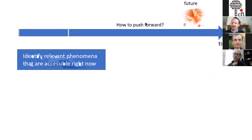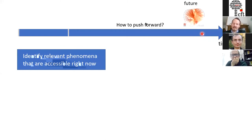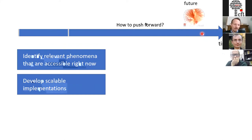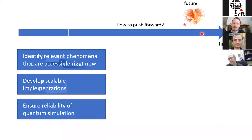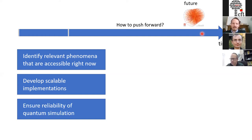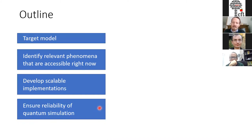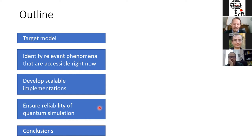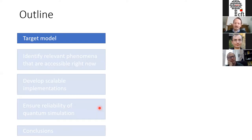We also want to proceed to more complex and larger systems, which requires scalable implementations. And once we scale up, we need to ensure that these devices work — interesting questions also from the theory side. The outline of my talk addresses these three topics as examples of recent work, preceded by the target model we are studying: quantum electrodynamics in one spatial dimension.